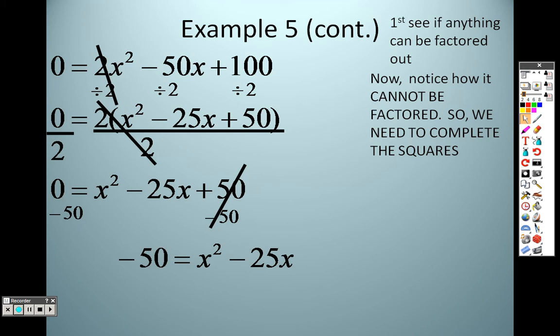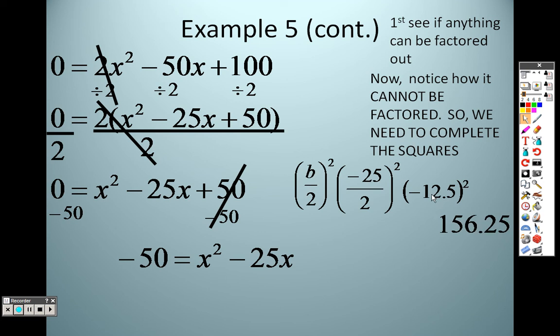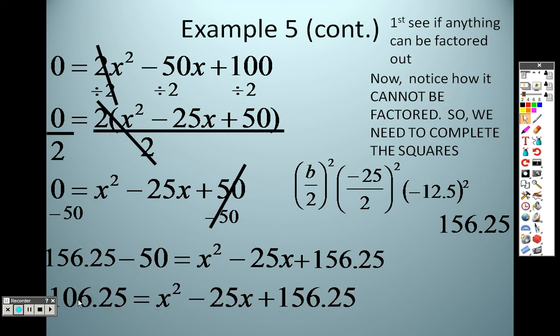I'm going to get all the x's on one side so I can complete the squares and all the numbers on the other. So when I do that, I am now going to try to figure out what I can put on each side. So according to completing the squares, it's b over 2 squared, so I take this negative 25, which is b, so it's negative 25 over 2 squared. And when you square both of those, that's 625 and 4, so it's actually negative 12.5 squared, which is 156.25, which means I need to add that to both sides. And when I combine my like terms here, I get 106.25 equals x squared minus 25x plus 156.25.